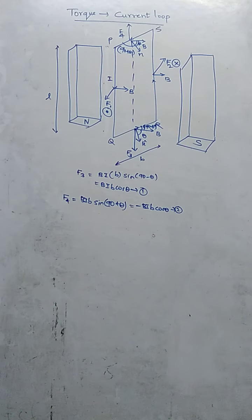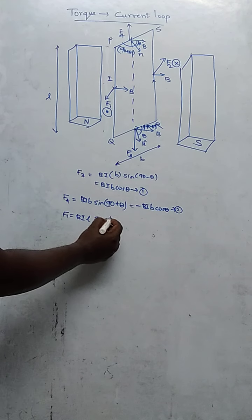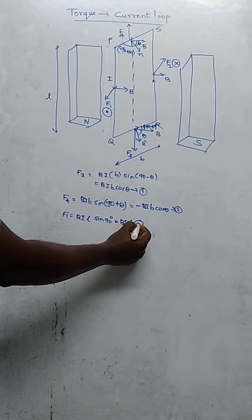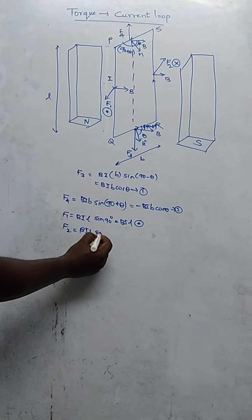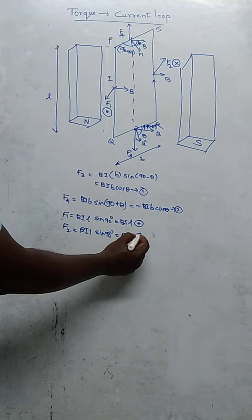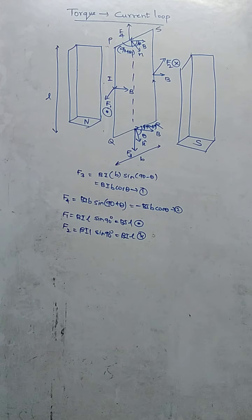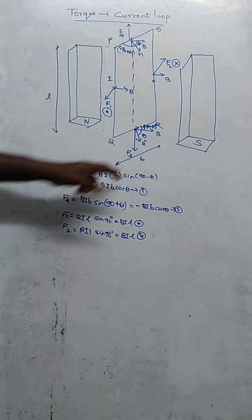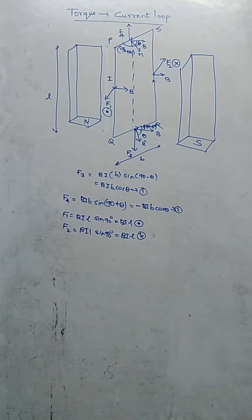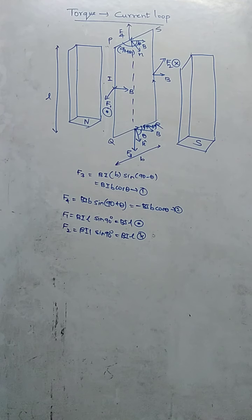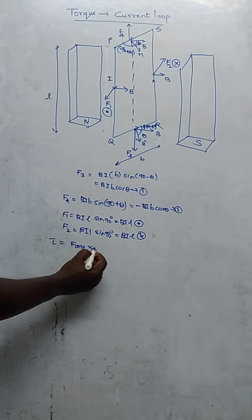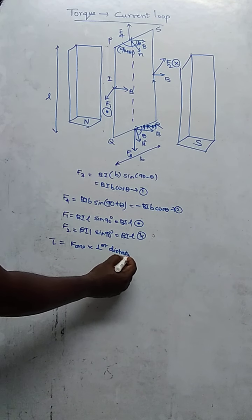Now let us find F1 and F2. F1 = BIL sin 90 = BIL, acting in the upward direction as represented by a dot. And F2 = BIL sin 90 = BIL, acting into the plane. Both are not acting in the same line of action. F3 and F4 are in the same line of action, hence they cancel each other. But F1 and F2 are acting in different lines of action, hence they constitute a torque.